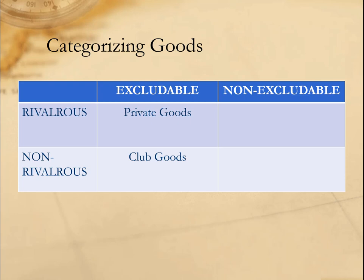Conversely, we have goods that are rivalrous but non-excludable. Here, one person's use of a good necessarily diminishes another person's use, but it's difficult or impossible to prevent someone who hasn't paid from using it. These are normally called common pool goods. The best example of a common pool resource is fish stocks in the ocean. One person's consumption of fish stocks — especially in cases of overfishing — will undermine someone else's ability to use the same stocks. And it's exceedingly difficult to prevent someone who isn't authorized to fish from doing so, especially when fish move between international jurisdictions like in the North Atlantic.